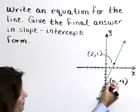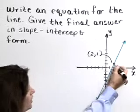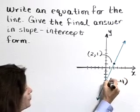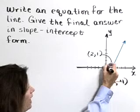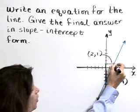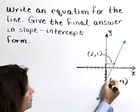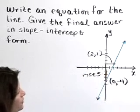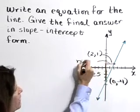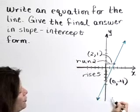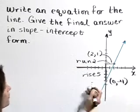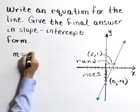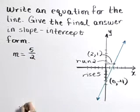As we move from the point 0, negative 4 to the point 2, 1, we need to travel up 5 units and over 2. So we're going to rise 5 units and this is a run of 2 units. Therefore the slope of this line is 5 halves.